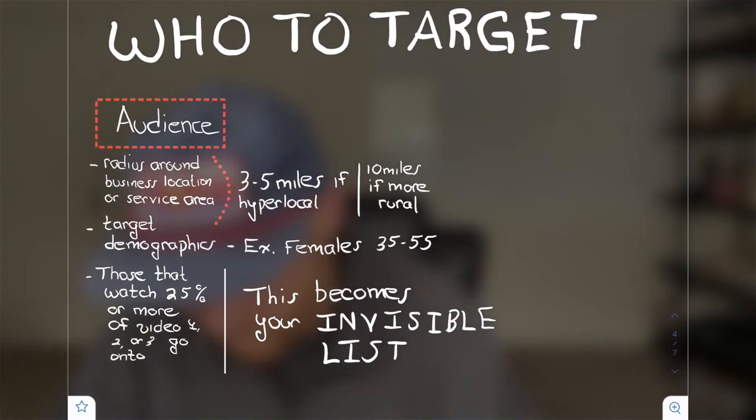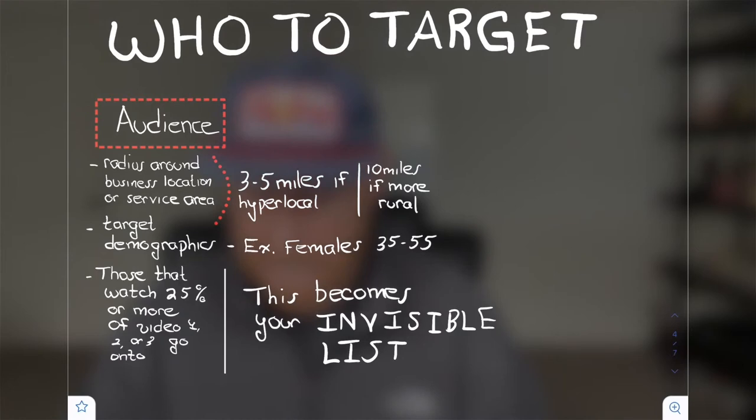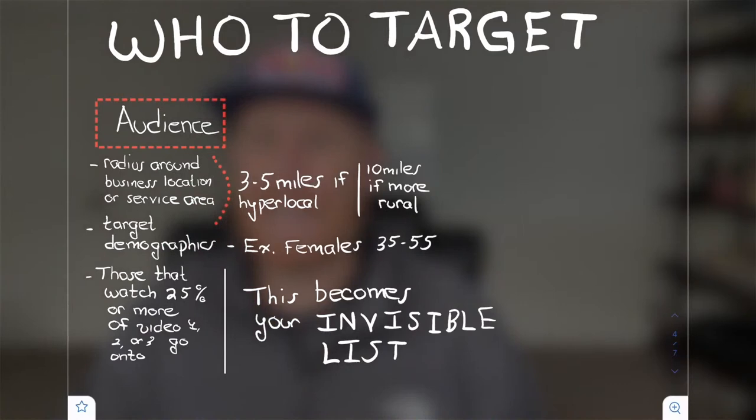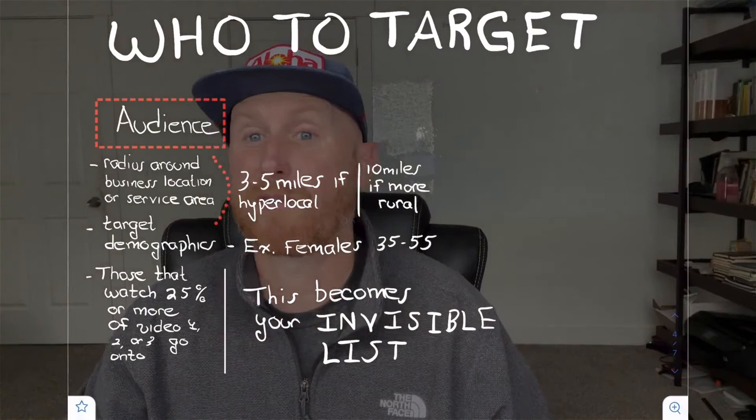You're also going to have your target demographics. For example, if I'm a functional medicine doctor trying to target patients with thyroid disease, I'm going to target the most likely demographic that's going to have that problem — females 35 to 55. Then we're going to show these videos to that target demographic, and we are going to create an invisible list of people that have watched 25% or more of your videos.